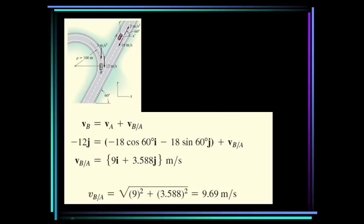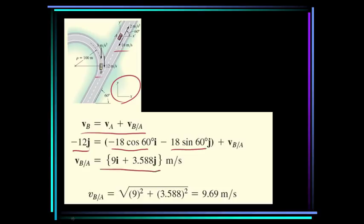Let's solve this problem. The velocity of B is minus 12j. The velocity of A is 18 meters per second in the third quadrant, so it's minus 18cos(60)i minus 18sin(60)j. Simplifying and computing the magnitude as the square root of the sum of the squares, the magnitude of the velocity of B with respect to A is 9.69 meters per second.